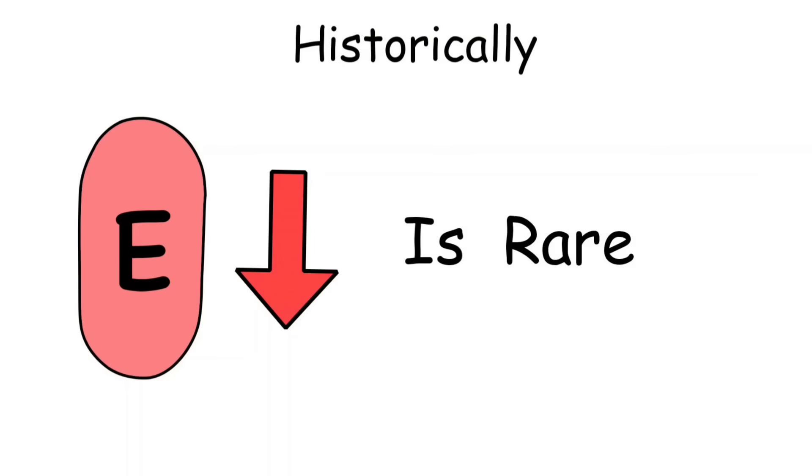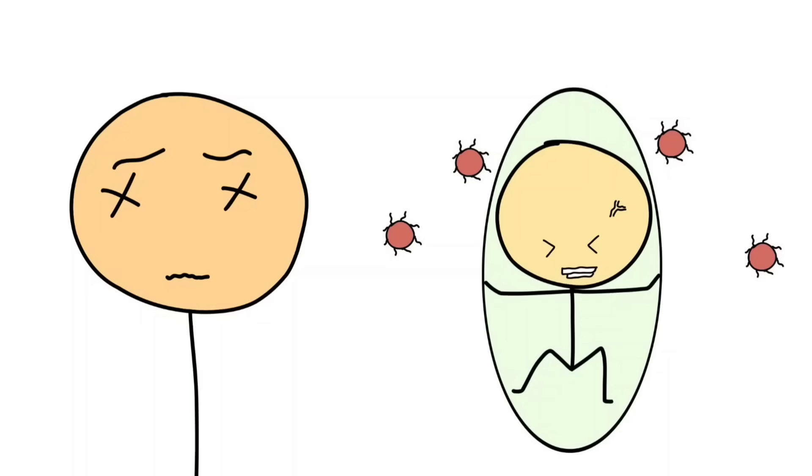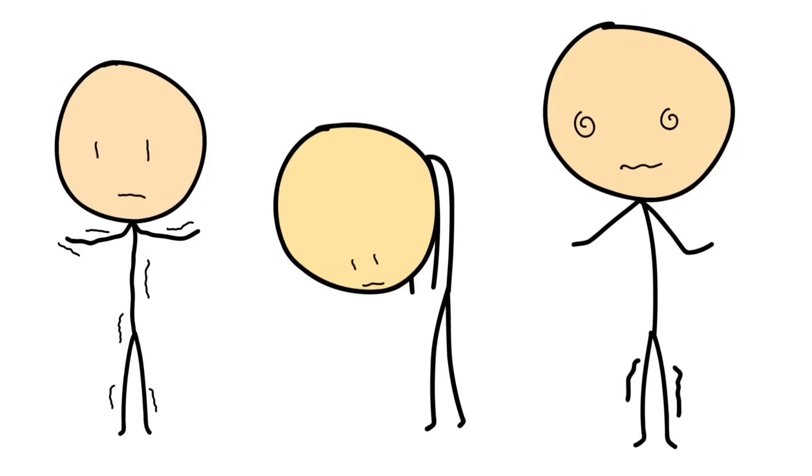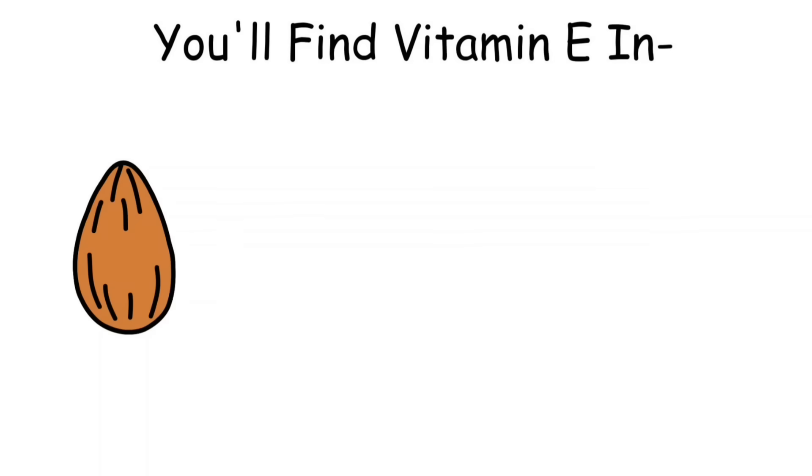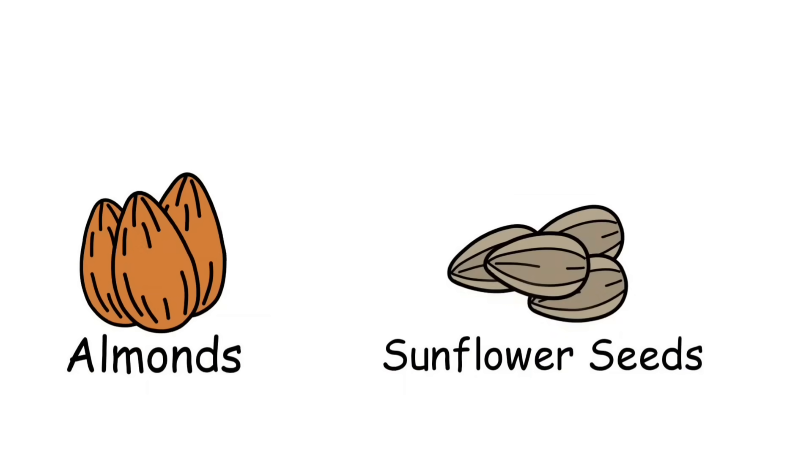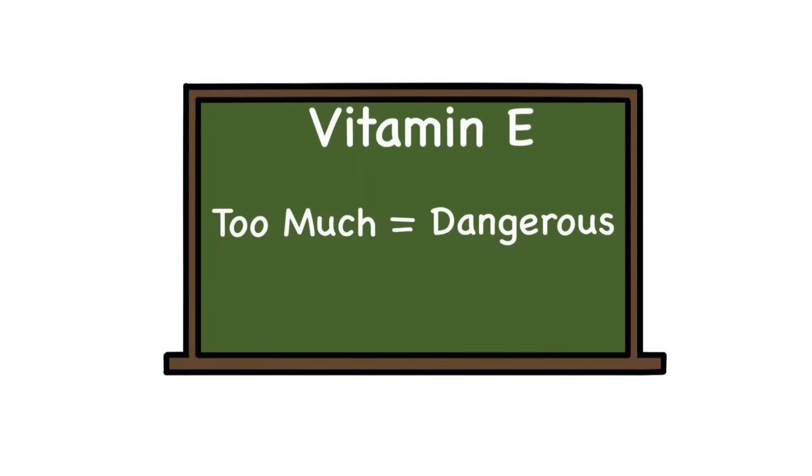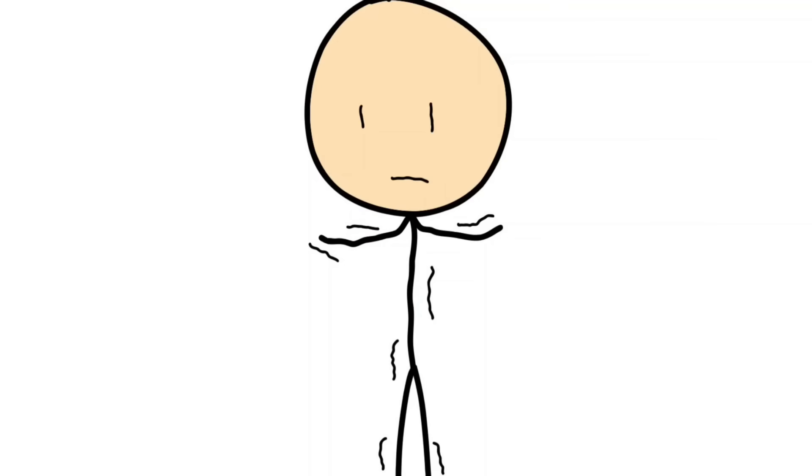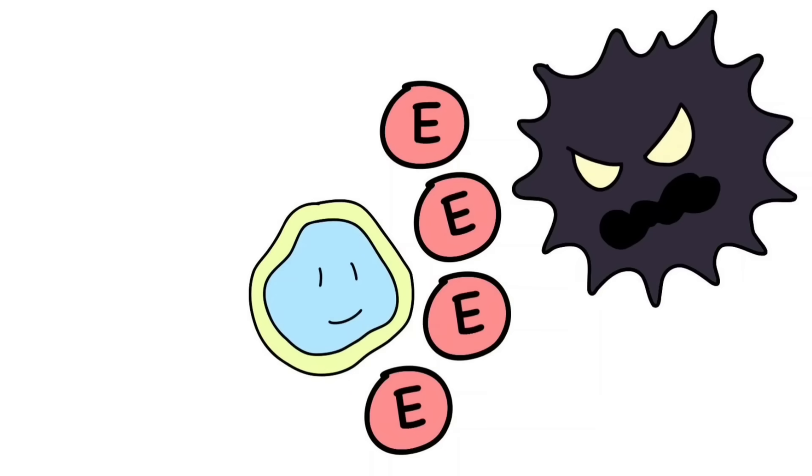Historically, vitamin E deficiency is rare, but when it happens, it can cause nerve and muscle damage, vision problems, and a weakened immune system. Think tremors, muscle weakness, and difficulty coordinating movement - symptoms nobody wants. You'll find vitamin E in nuts, seeds, vegetable oils, and leafy greens. Almonds and sunflower seeds are especially rich sources. While supplement companies love to push high-dose vitamin E pills, research shows too much can actually be harmful, potentially increasing risks for certain health problems instead of solving them. So while vitamin E might not have the fame of vitamin C or the sunshine appeal of vitamin D, it's quietly working behind the scenes, keeping your cells safe from daily wear and tear.